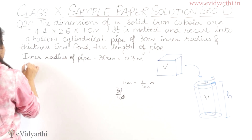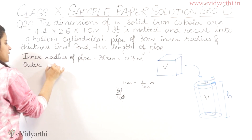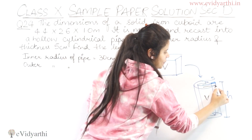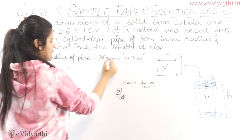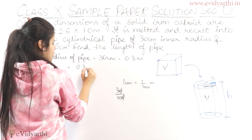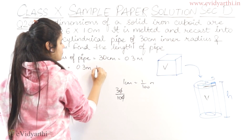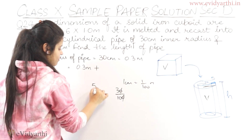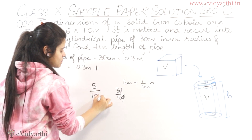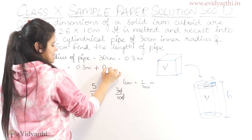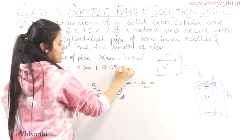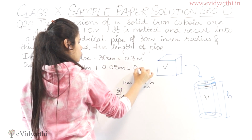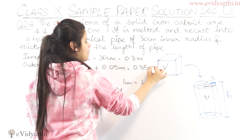Now for the outer radius: outer radius = inner radius + thickness. Inner radius is 0.3 m, and thickness is 5 cm. Converting 5 cm to meters gives 0.05 m. So outer radius = 0.3 + 0.05 = 0.35 meters.